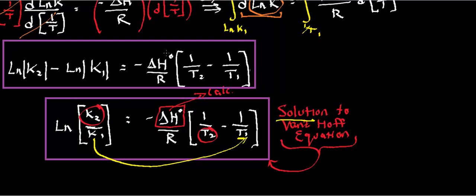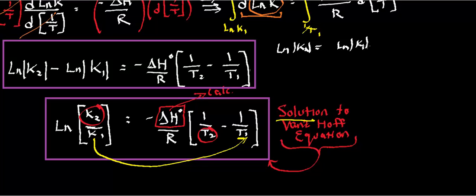Well, if I added ln of k1 to both sides, I get ln of k2 is equal to, I'm going to have ln of k1, and that's going to be subtracting delta H standard over R times 1 over t2 minus 1 over t1.